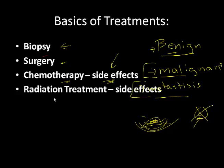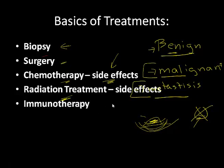Radiation treatment is used when you have a localized tumor. We don't radiate the whole body because radiation will kill cells — in this case, we want it to kill the cancer cells. Radiation is used when you have a tumor in a specific spot and you can beam it with radiation, hopefully destroying the cancer cells without killing the surrounding cells. There are also newer chemotherapy treatments being developed that are more specific, attacking only cancer cells and not healthy ones.